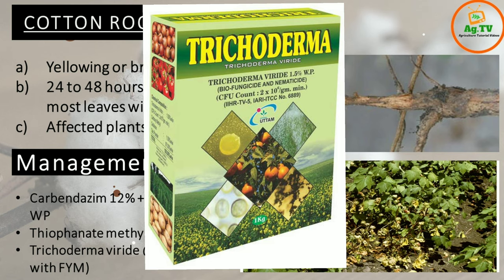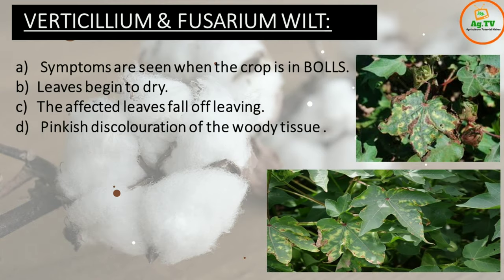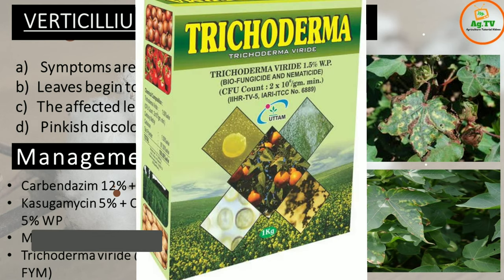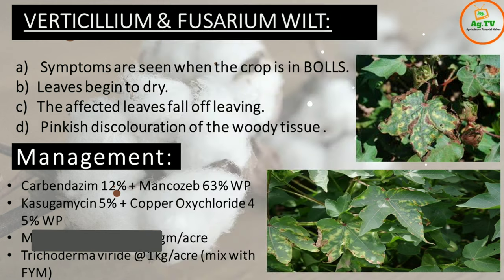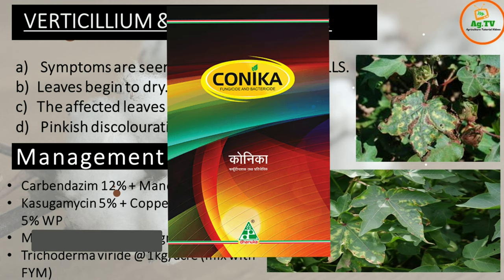You can also treat Verticillium and Fusarium wilt in cotton crop. The water conducting tissues dry out, affected leaves fall, and pinkish discoloration appears in the stem and body tissues. This is a fungal infection. Use Trichoderma viride, Carbendazim 12% + Mancozeb 63% WP, or Kasugamycin 5% + Copper Oxychloride 45% WP.